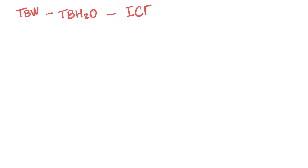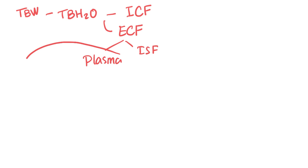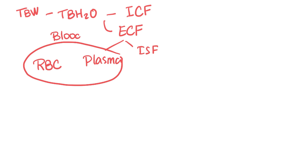Get a piece of paper and draw this with me. Here is your total body weight. As you know, 60% of your total body weight is made of water. Most of this water is in the intracellular fluid; the rest is in the extracellular fluid. Speaking of the extracellular fluid, it could be plasma or interstitial fluid. You know the plasma — what else is in your blood? Red blood cells. So your blood is basically red blood cells and plasma.